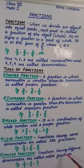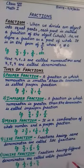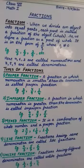Next we have unlike fractions. Fractions having different denominators are called unlike fractions. Let's see some examples: 2 by 3, 6 by 7, 4 by 9. Here we can see that the denominator is different in all of them. That's why they all are unlike fractions.